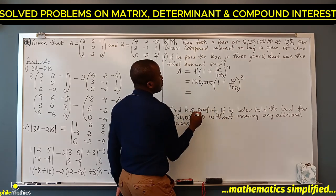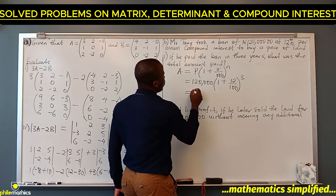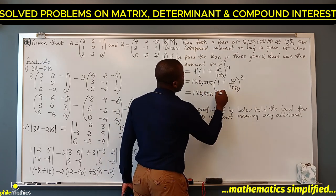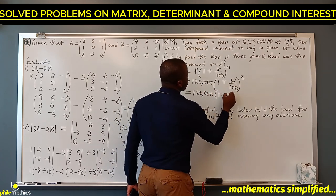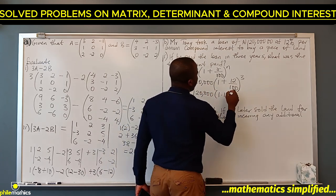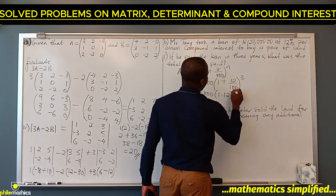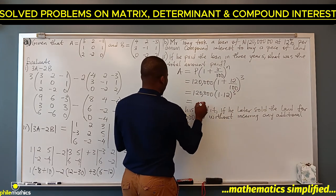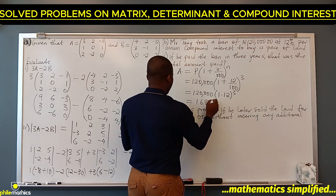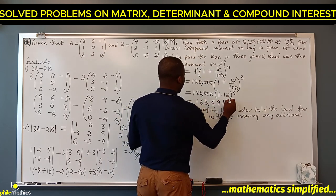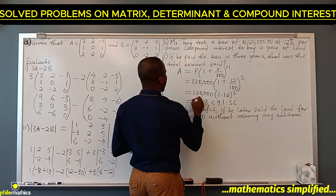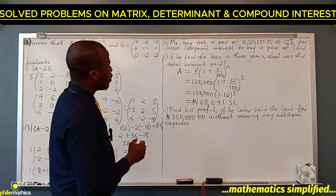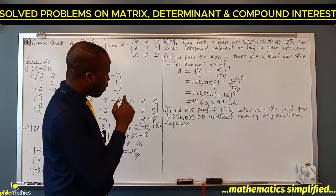Adding inside the bracket: 1 + 0.12 = 1.12. So A = 120,000 × (1.12)^3. Multiplying this out gives 168,591.36. So this is the total amount he is going to pay back after three years.